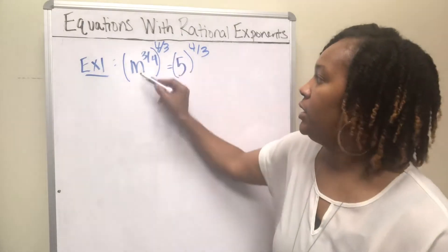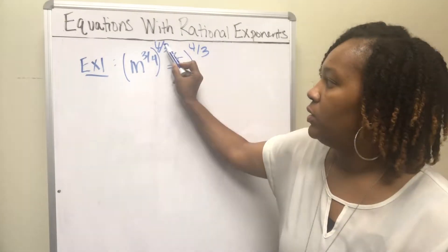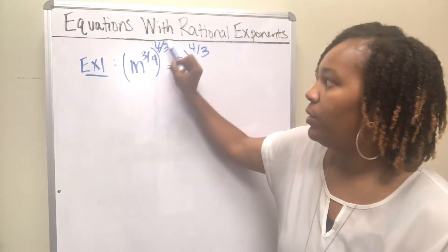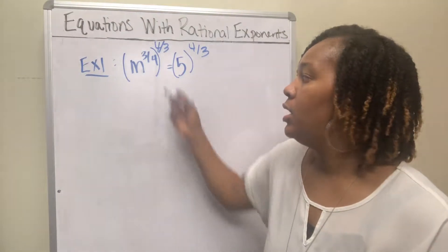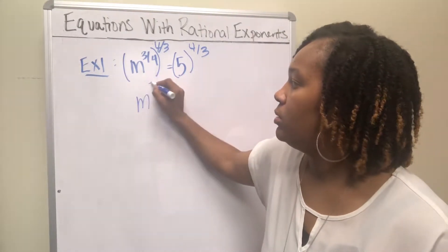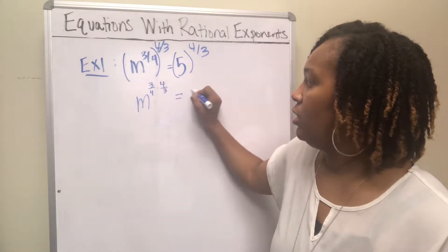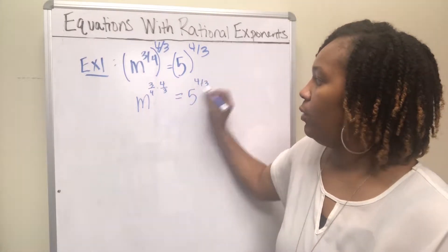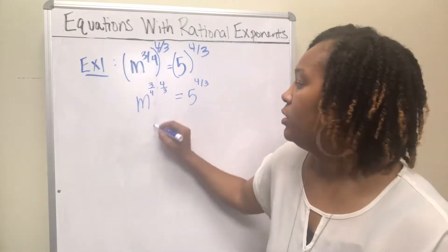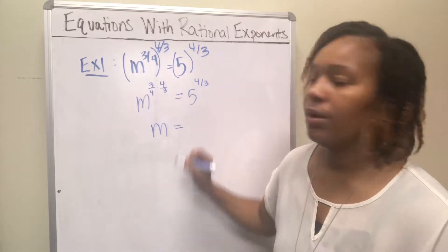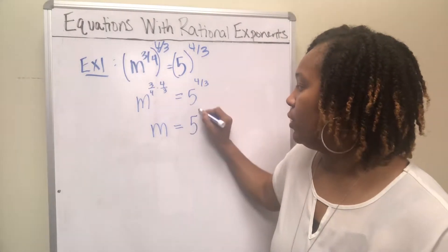When you have a base with an exponent raised to another exponent, you can combine the exponents by multiplying them. So this essentially becomes m to the 3/4ths times 4/3rds, and you get 5 to the 4/3rds on this side. A number times its reciprocal is 1, so this becomes m to the 1st power — we just write it as m. And this side is 5 to the 4/3rds.